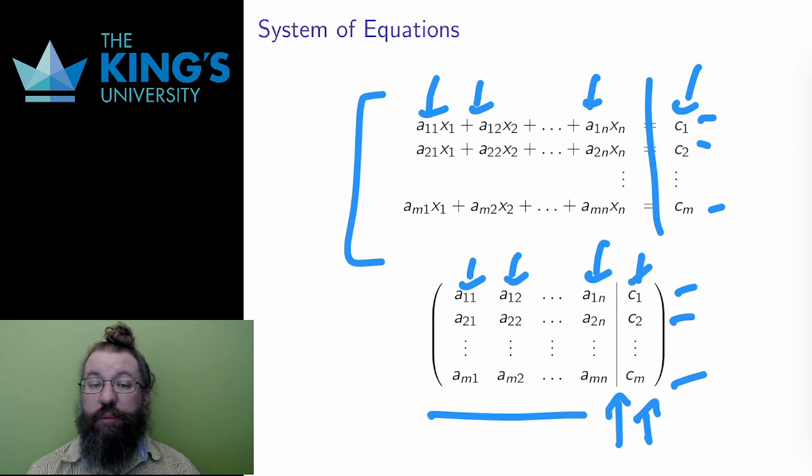The variables themselves are not in the matrix. I keep track of the variables just by the columns. The first column is for the first variable, the second column for the second, and so on.